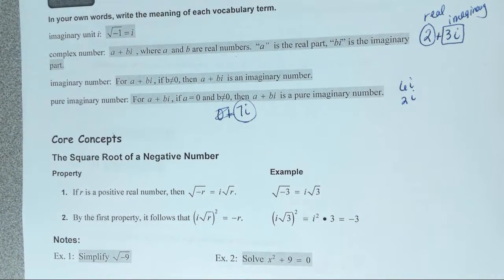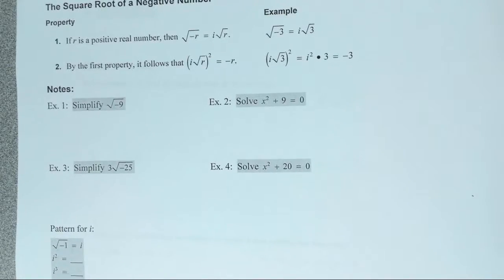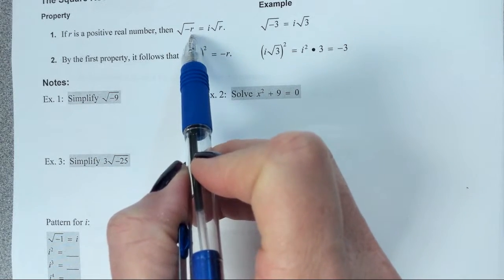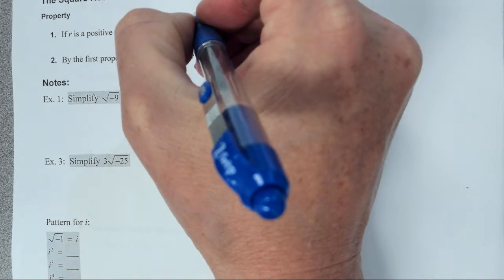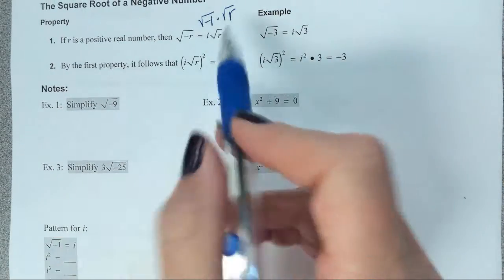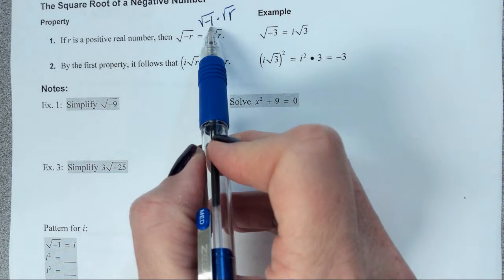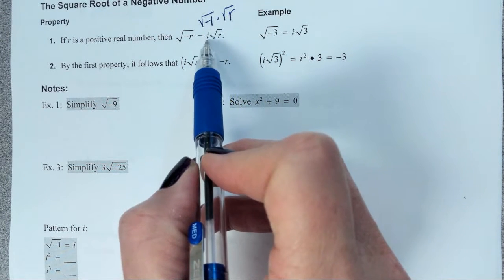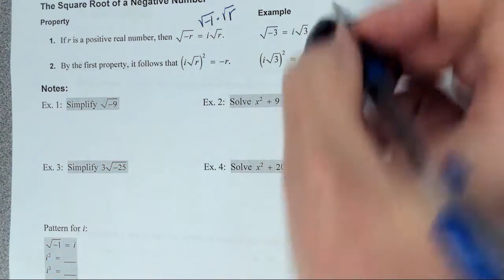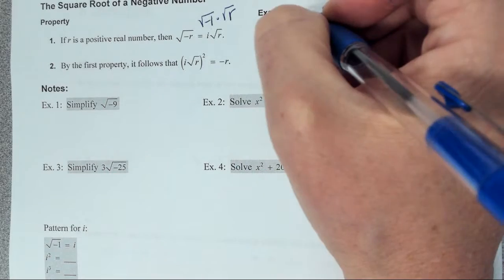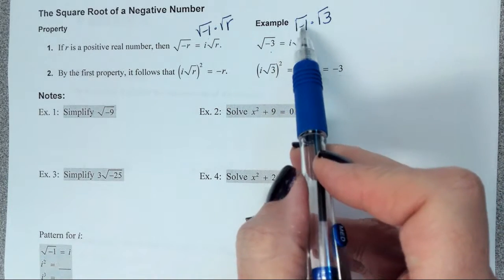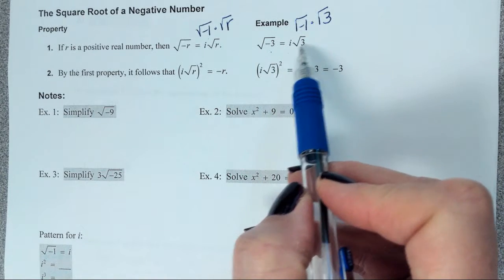How are we going to use these things? If I have a square root like the square root of negative r, I'm really thinking of that as the square root of negative 1 times the square root of r. The square root of negative 1 is i, so that is going to be i radical r. For example, the square root of negative 3 is the square root of negative 1 times the square root of 3, which equals i radical 3.